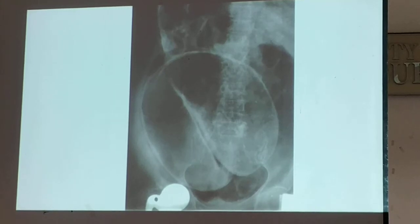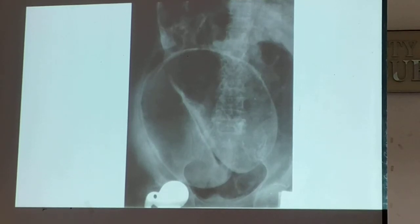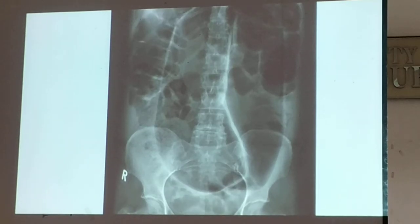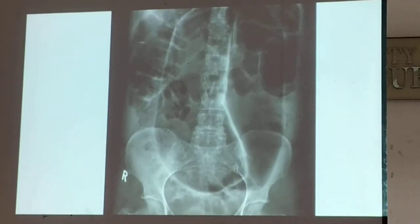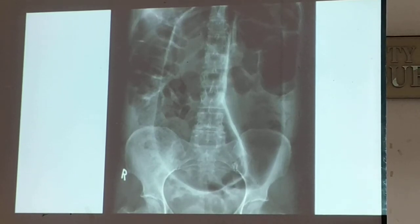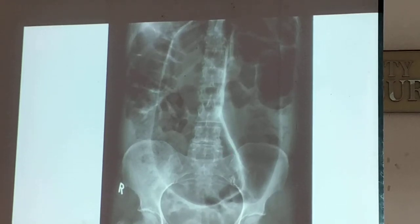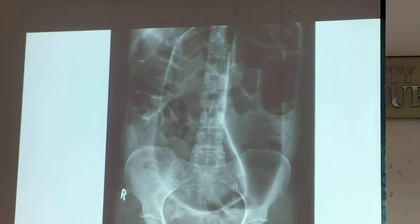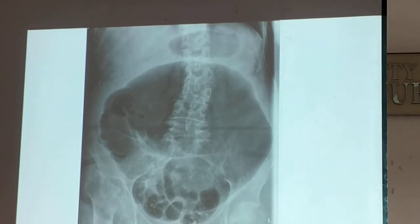So how many signs are there now — there's the football sign and the coffee bean sign. This is another picture of the coffee bean, and this one is more typical. Is this small bowel or large bowel? Large — because if it were small bowel, it would have already ruptured. The diameter is almost one half of your film.